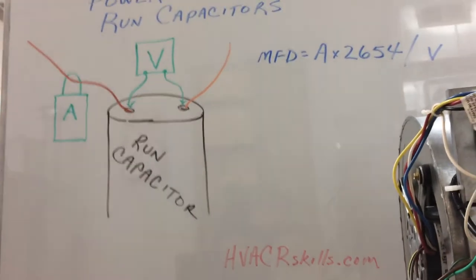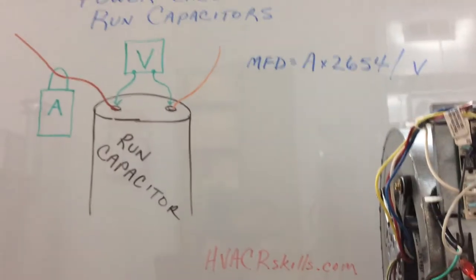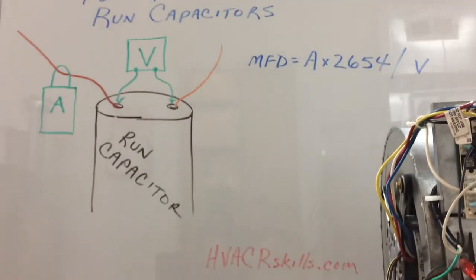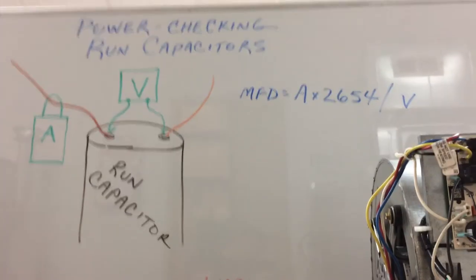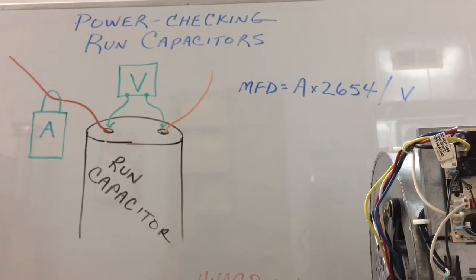And you're going to find sometimes that when I do the test with my meter and then compare it to the power checking method, you may end up with a power checking method coming up with slightly lower numbers. Remember, you are checking this capacitor under load in the machine. Please remember that most capacitors are stamped with a tolerance of plus or minus 5%, plus or minus 6%.